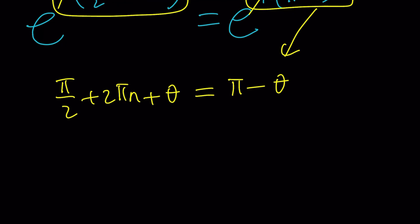Now we're trying to solve for theta, so let's go ahead and put the thetas together. 2 theta equals pi minus pi over 2, which is pi over 2, minus 2 pi n.